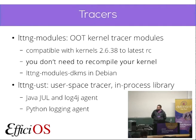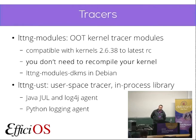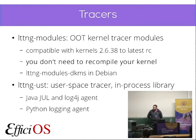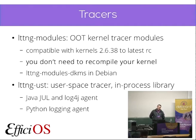The second tracer we support is the user space tracer, which is basically an in-process library that allows you to trace user space applications. However, those applications will need to be instrumented, so trace points will need to be added to the source code like logging statements. There are also agents for popular logging frameworks in interpreted languages — we have an agent for Java logging, log4j, and also for the Python logging subsystem. The UST tracer permits correlating traces from user space applications with kernel traces.